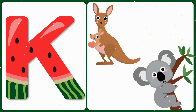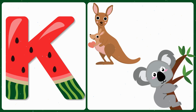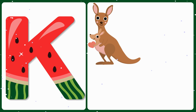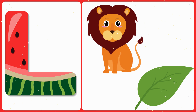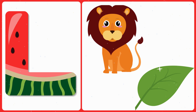K — K is for kangaroo, K is for koala. L — L is for lion, L is for leaf.